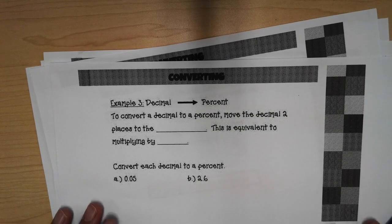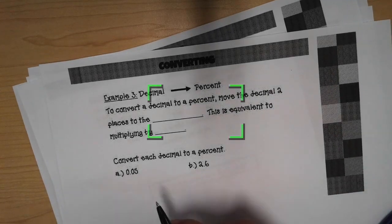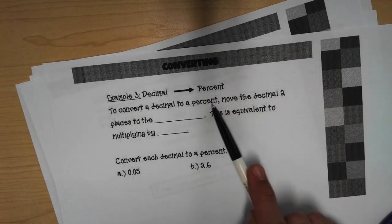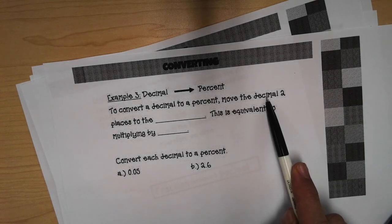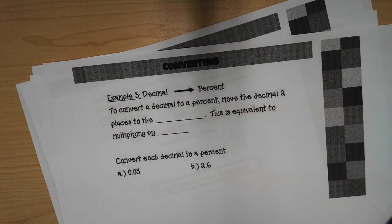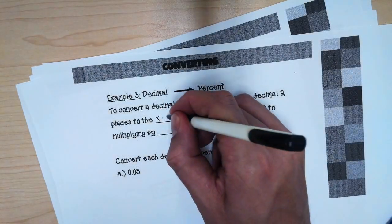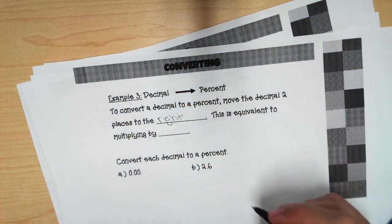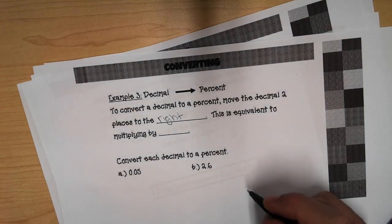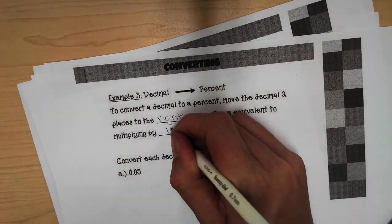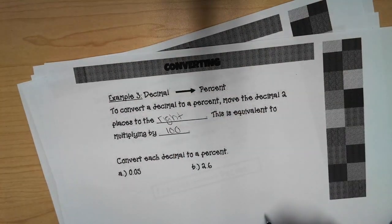Let's convert a decimal to a percent. To convert a decimal to a percent, move the decimal two places to the E. Did you say to the right? If you said to the right, then you were correct. In fact, this is equivalent to multiplying by a hundred.